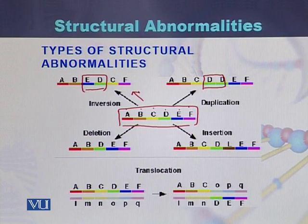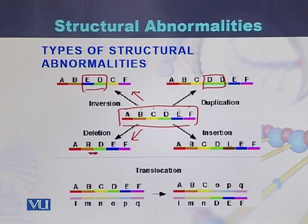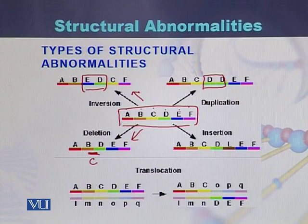In the case of deletion, we will see A, B, and there is a deletion of fragment C — there is no fragment C. So B and D are joined with each other and there is a deletion of C.